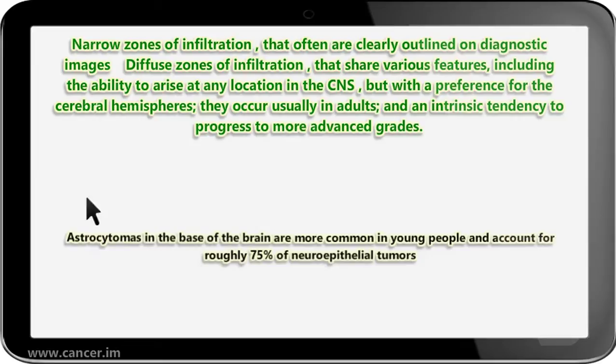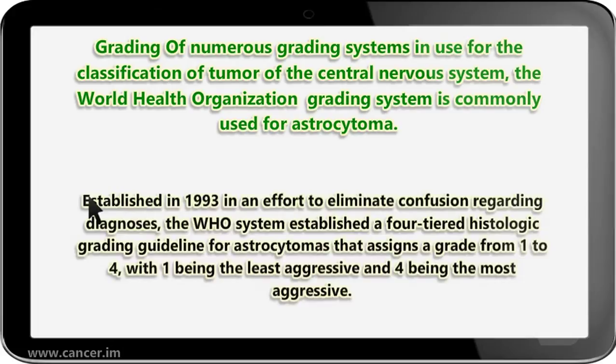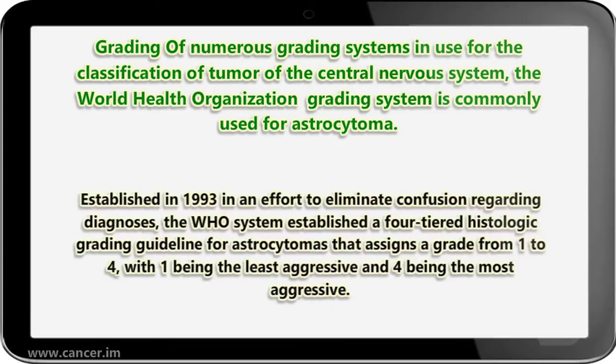Astrocytomas in the base of the brain are more common in young people and account for roughly 75% of neuroepithelial tumors. Among the numerous grading systems in use for the classification of tumors of the central nervous system, the World Health Organization grading system is commonly used for astrocytoma. Established in 1993 in an effort to eliminate confusion regarding diagnoses, the WHO system established a four-tiered histologic grading guideline for astrocytomas that assigns a grade from 1 to 4, with 1 being the least aggressive and 4 being the most aggressive.